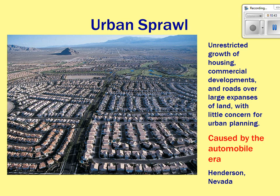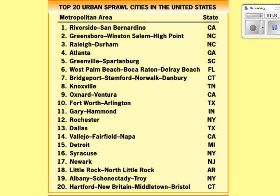Urban sprawl is especially common in the Sunbelt, where population growth leads to continued outward expansion rather than densifying the city center. Looking at the top 20 urban sprawl cities, California ranks number one, and the next several cities are all part of the Sunbelt. Even Southern California can be considered part of the Sunbelt, so the region accounts for a large share of cities with significant urban sprawl.